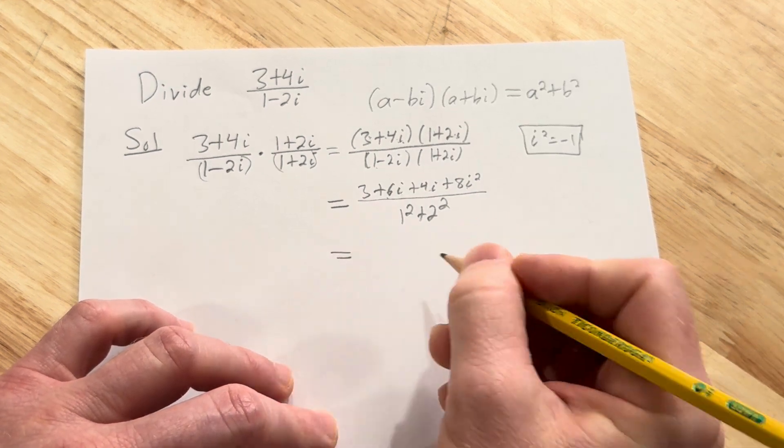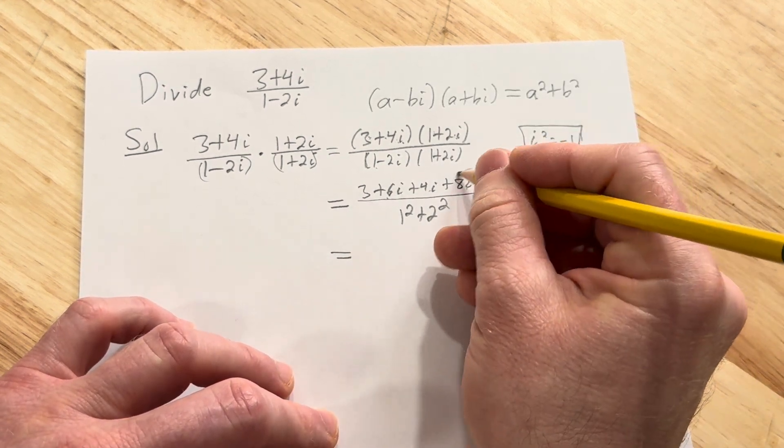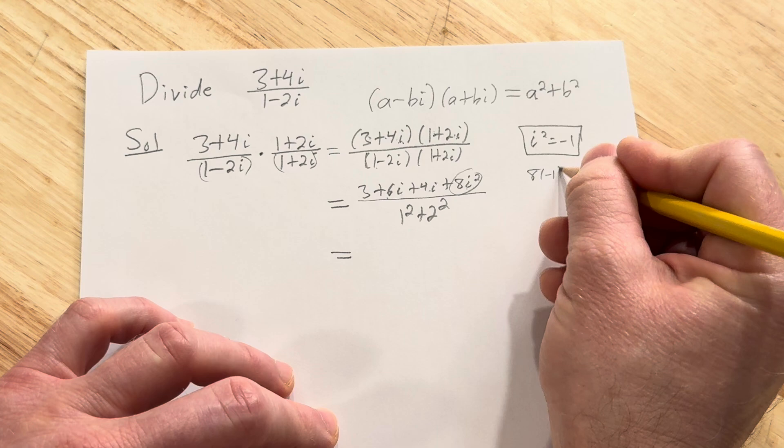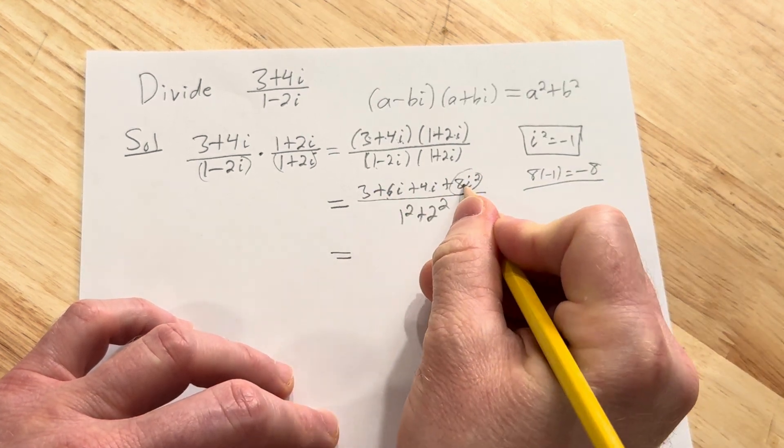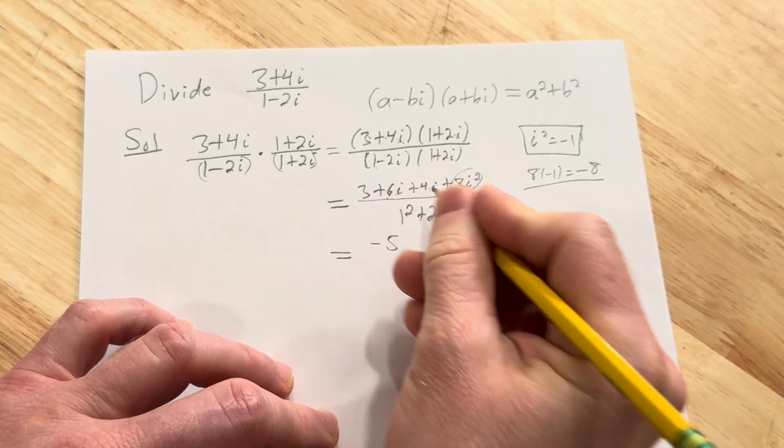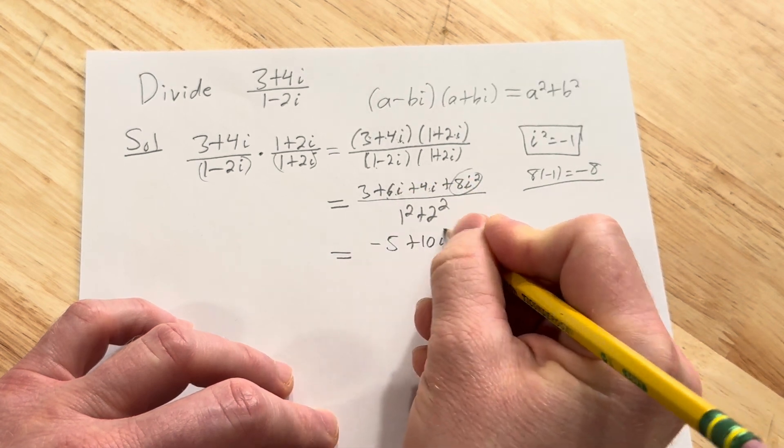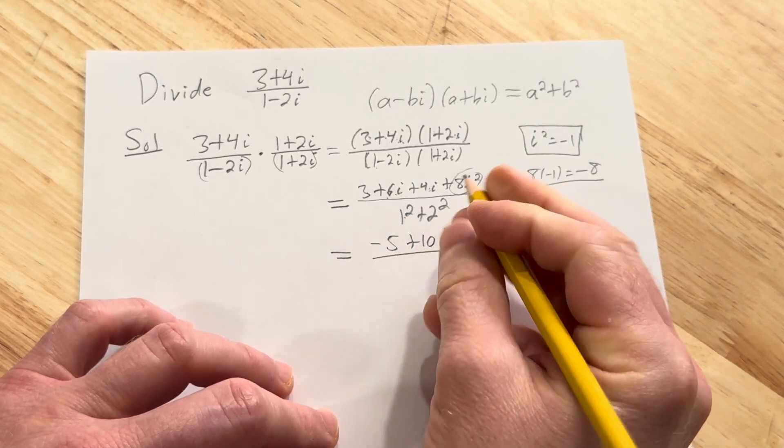This is equal to... So let's see. 8i squared, well that's going to be 8 times negative 1 which is negative 8. So it's going to be 3 minus 8 which is negative 5. 6i plus 4i is 10i. And then we have 1 plus 4 which is 5.